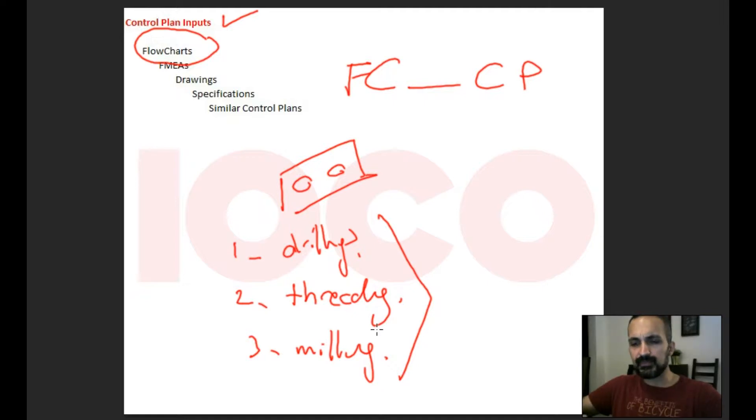In the control plan, I need to see the control points and other control details for all production steps. There must be correlation between control plan and flowcharts, including from incoming quality to the packaging stage. You have to show me all the control points for all production steps in order.